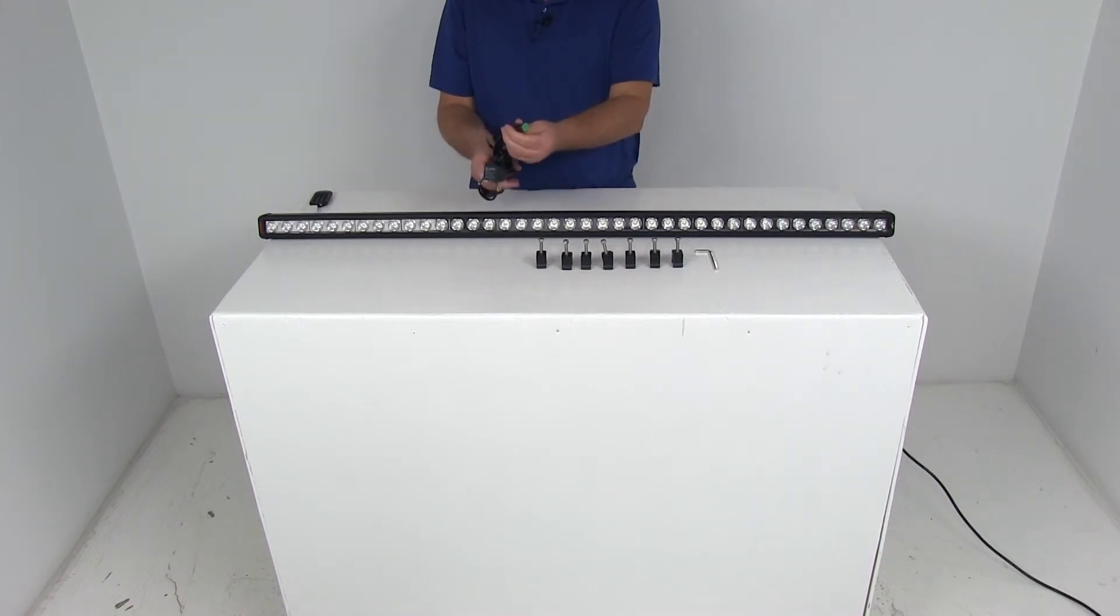The other nice features on the other end here is the industry standard triple sealed Deutsch connector, which would plug into the connector here on the light bar. And basically what happens there is when you plug this in, if you'll notice there's orange rings around here, that's a triple seal. And when it plugs in it will be real snug and it seals it and makes it weather proof, and then it clicks and locks into place. So it keeps the elements from getting to your connection to your light bar.